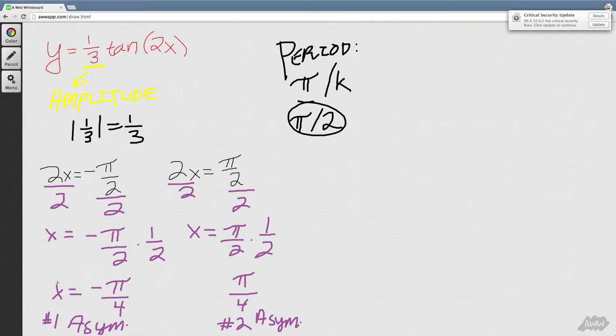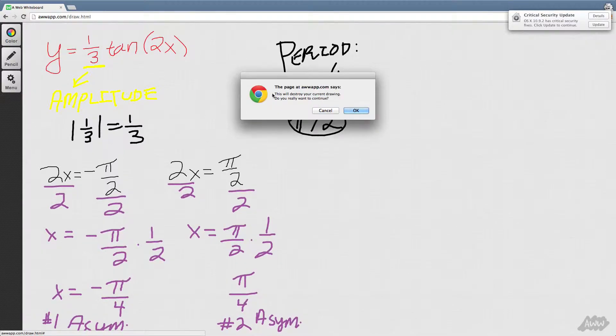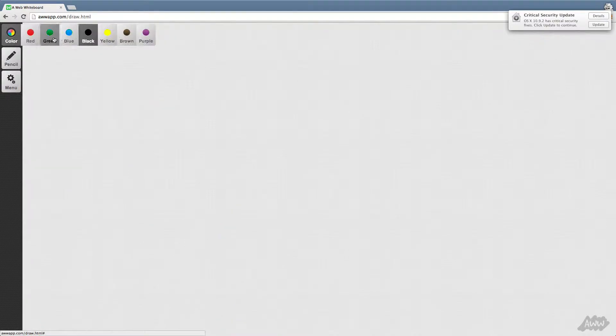Okay so now we have our asymptotes, our two asymptotes and our period and our amplitude even though that doesn't really come in. So we're now ready to graph this with the information we know.